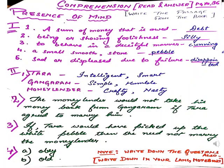Continuing with this slide, we will do comprehension — read and answer — which is given in page number 36. Children, you have to write the entire passage from the book, then copy down the questions, and then write the answers. Here I have given only the answers, but you have to write the questions also. This part I have already discussed in our online class, so I hope everyone can follow that part.